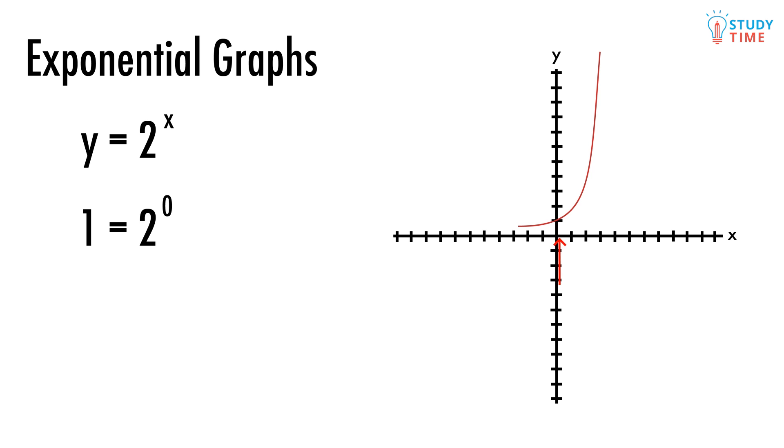As positive x values get bigger, y gets really, really big, and the graph curves up quickly. As negative x gets smaller, y gets really tiny, but never quite reaches 0. Play around with the numbers and you'll find some really interesting relationships.